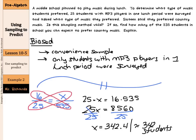Again, this is a biased sample, so you did not have to go and solve this question since it was biased. But if it were unbiased, this is how you would do it. That's it for this lesson on using sampling to predict. Good luck!